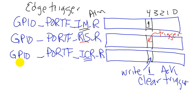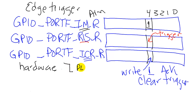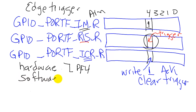In summary, the hardware — specifically the falling edge of PF4 — will set the trigger, and the software will acknowledge the trigger by writing a one to the interrupt clear register.